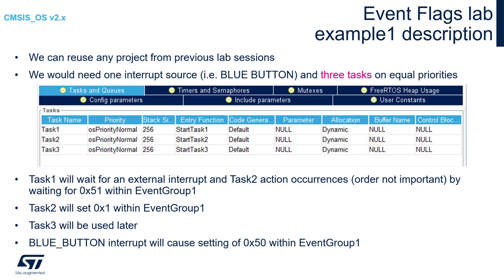The roles of those components will be the following. Task1 will wait for an external interrupt and Task2 action occurrences by waiting for 0x51 within Event Group 1. Task2 will set 0x01 within Event Group 1. Task3 will be used later. The blue button interrupt will cause setting 0x50 within Event Group 1.